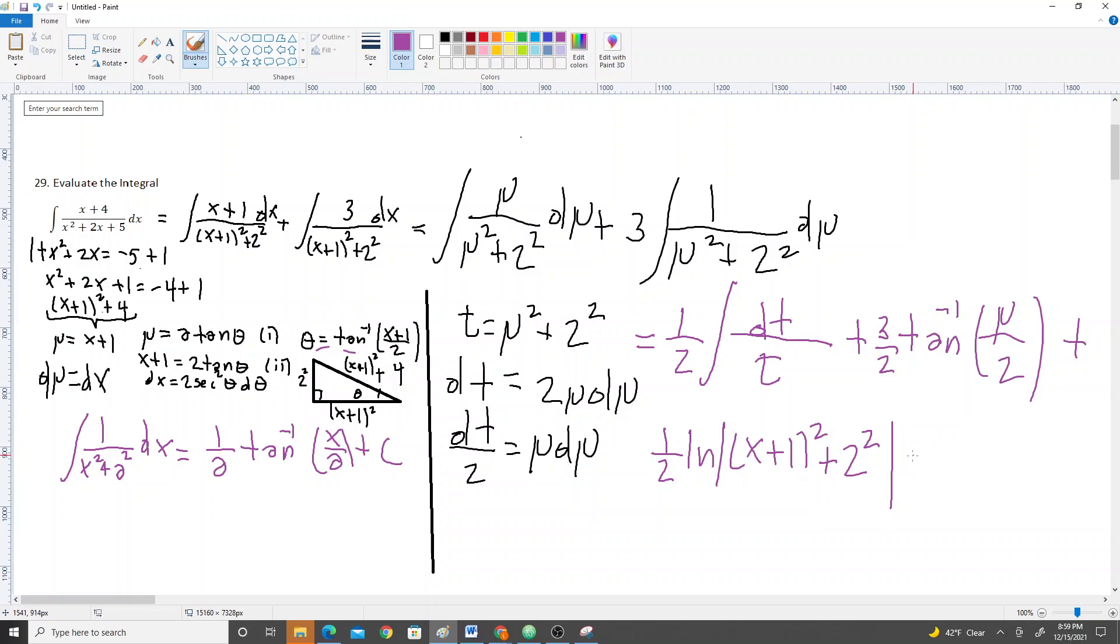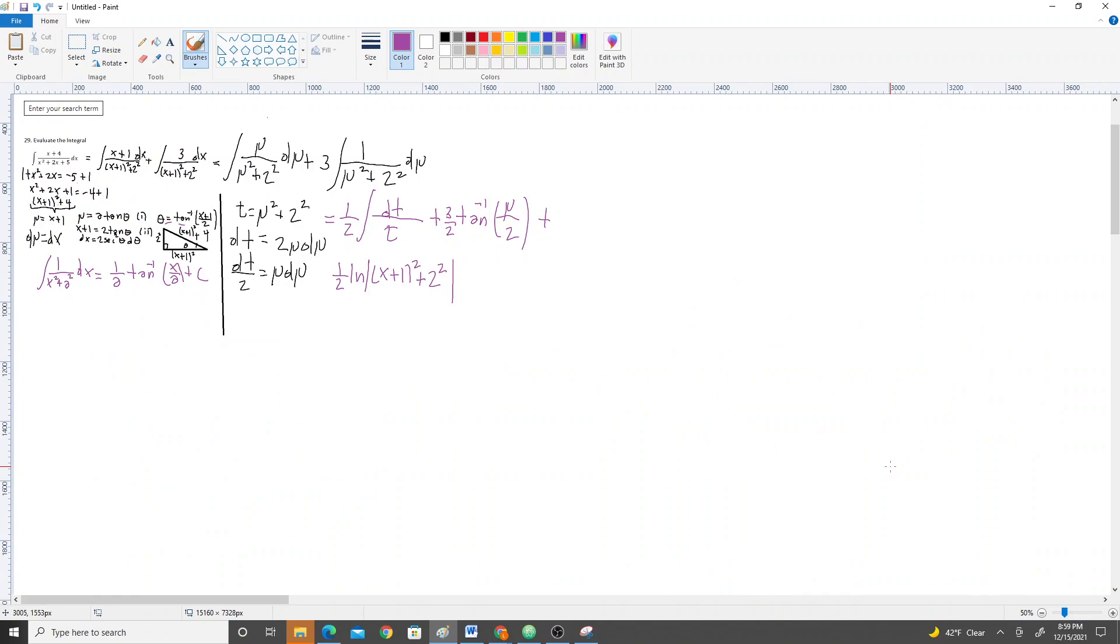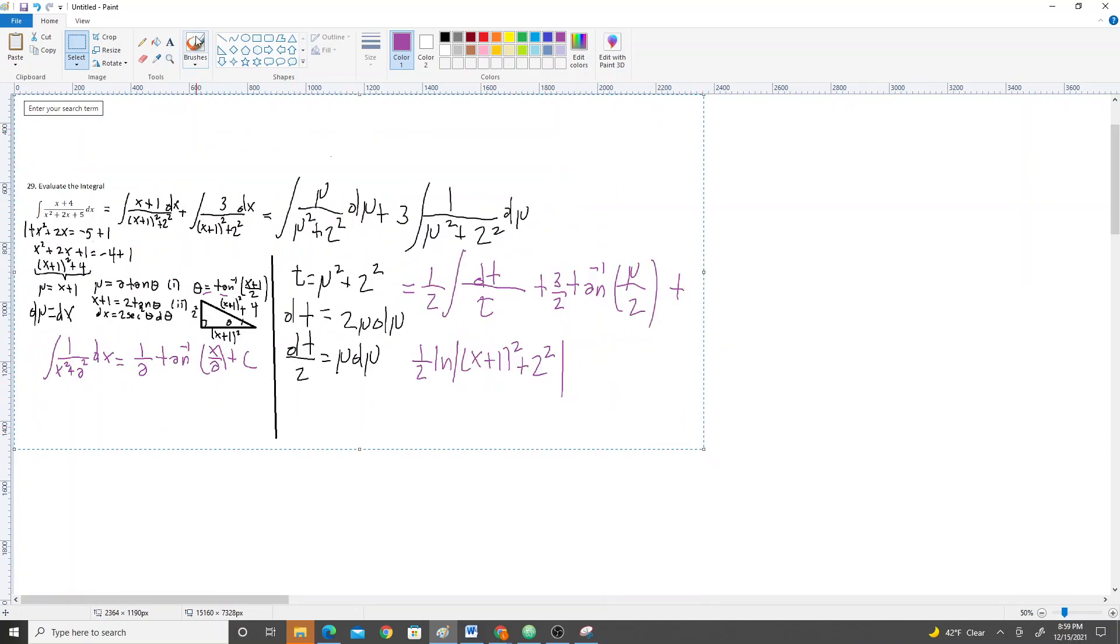And then the next integral. We've already evaluated. We just have to plug u back in. And let me zoom out. I'm just doing a tiny bit, like quarter of an inch. Alright. Let me see if I can do this the way I want. Alright, okay. So then this is 3 over 2. Everything stays the same except for the u inside. We're just plugging in what we used for u. And that's just x plus 1 over 2 plus c.